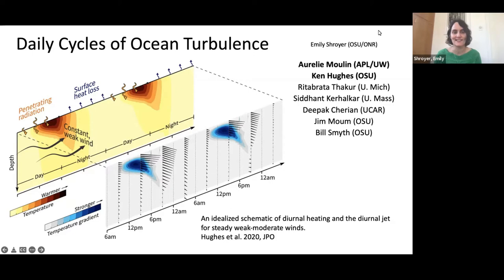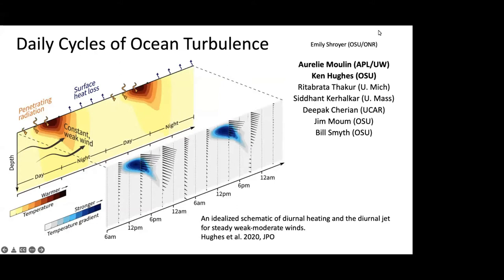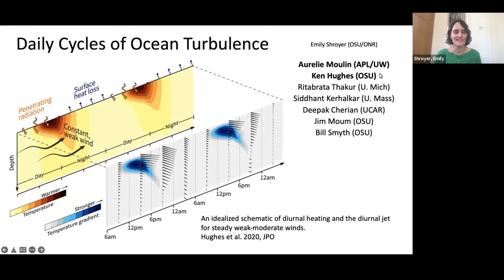Thanks, and thanks again to the organizers. It's challenging times to host a workshop, so I really appreciate all the effort going into this. I'm going to be talking about primarily diagonal warm layers and how that influences the upper ocean turbulence. I'll note my list of co-authors here, and you'll notice my name is small because the material I'm going to be presenting really relies on an incredible group of students and postdocs who have made their way through OSU over the last several years.